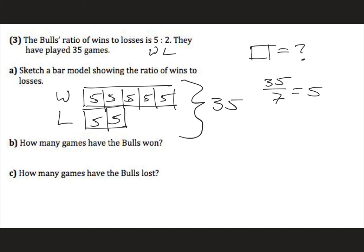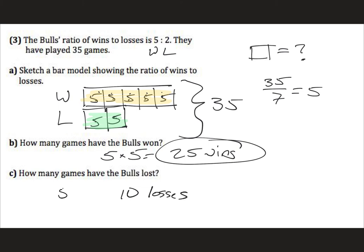So how many games have the Bulls won? We can look at all of their winning blocks. We have five blocks of five: five, ten, fifteen, twenty, twenty-five. Or five times five. They've had 25 wins. How many games have the Bulls lost? We can look at their losing blocks. Five plus five, which is ten. They've lost ten games.